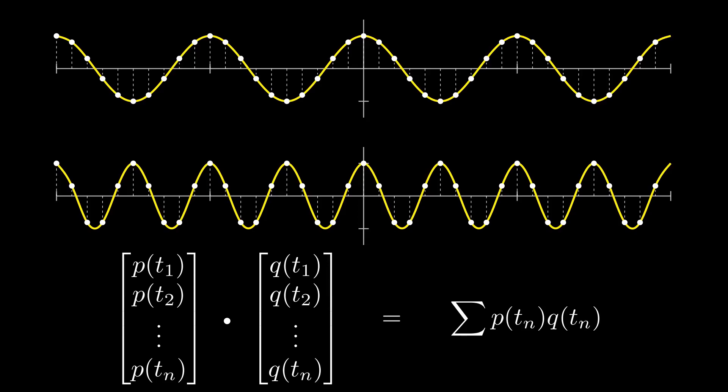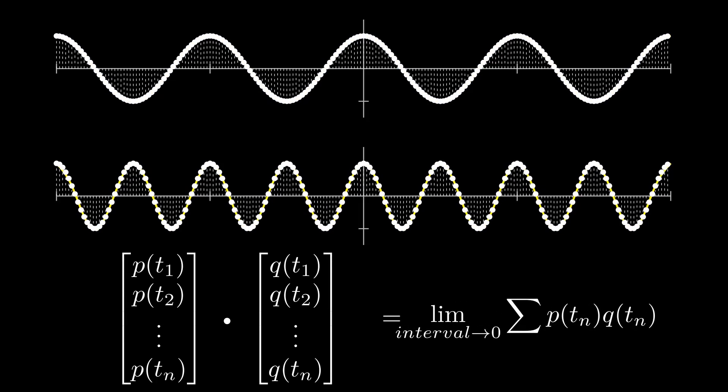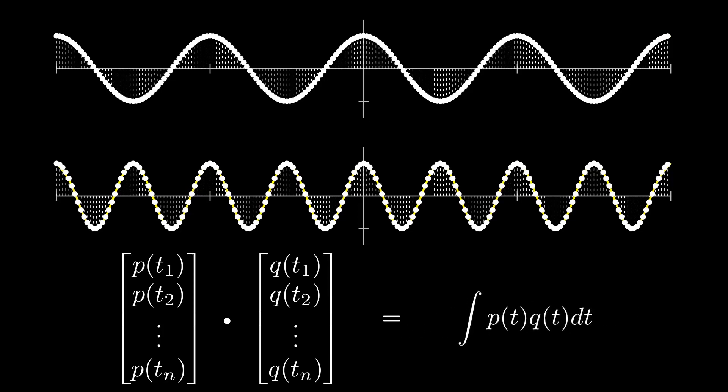If we want these two vectors to be an even more accurate representation of the signals, we take the limit as the time interval approaches zero. As a result, the sum becomes an integral. This integral is called the inner product of two functions, which is analogous to the dot product of two vectors.